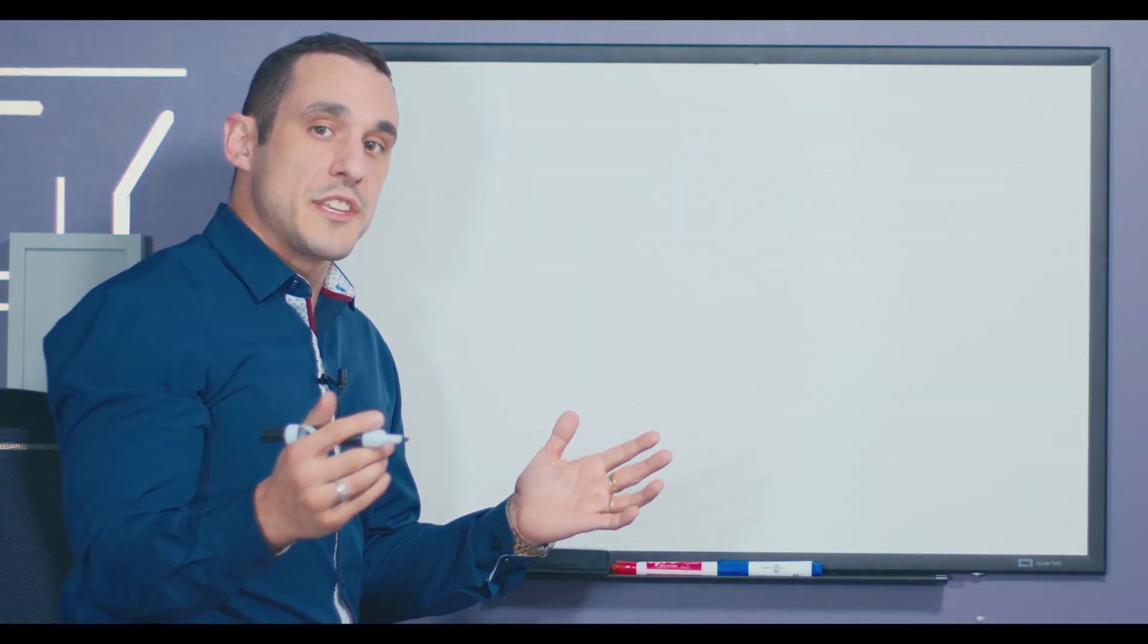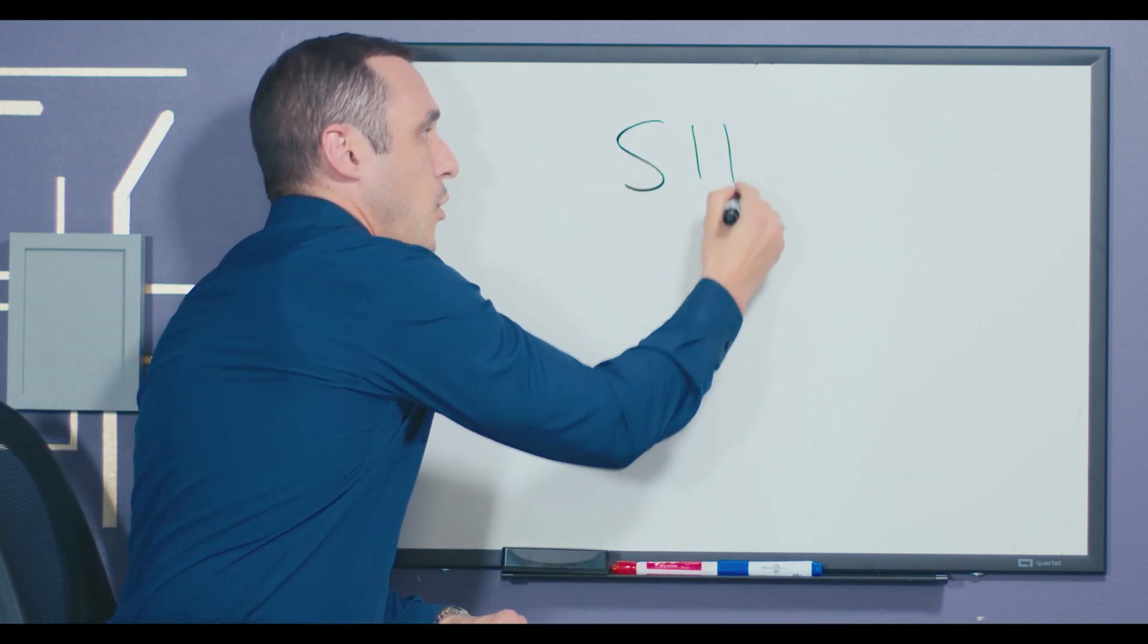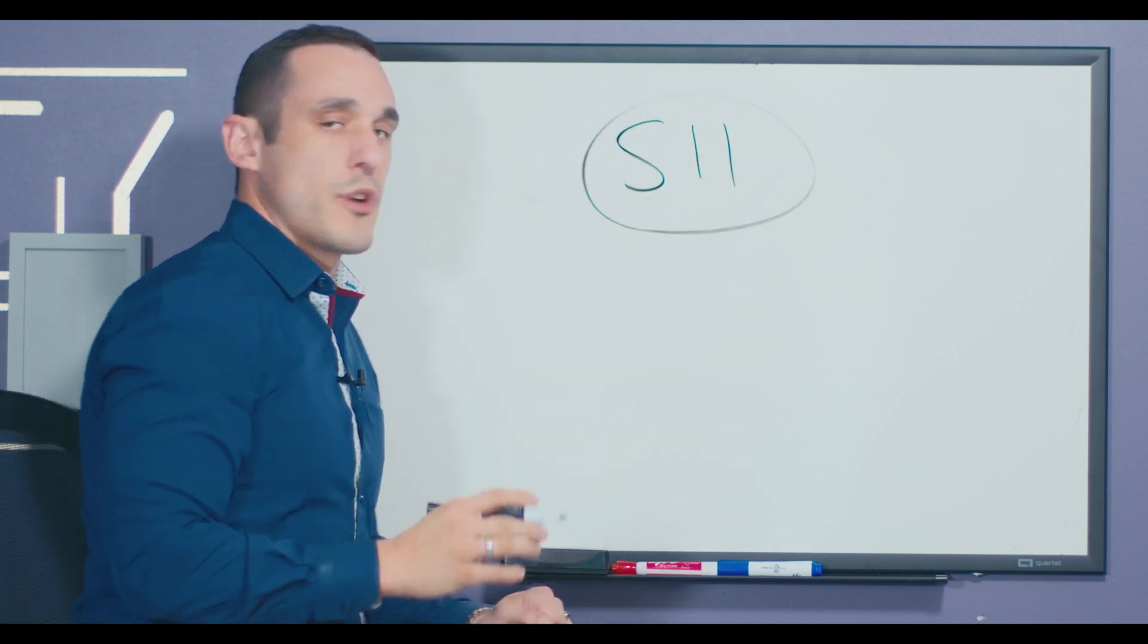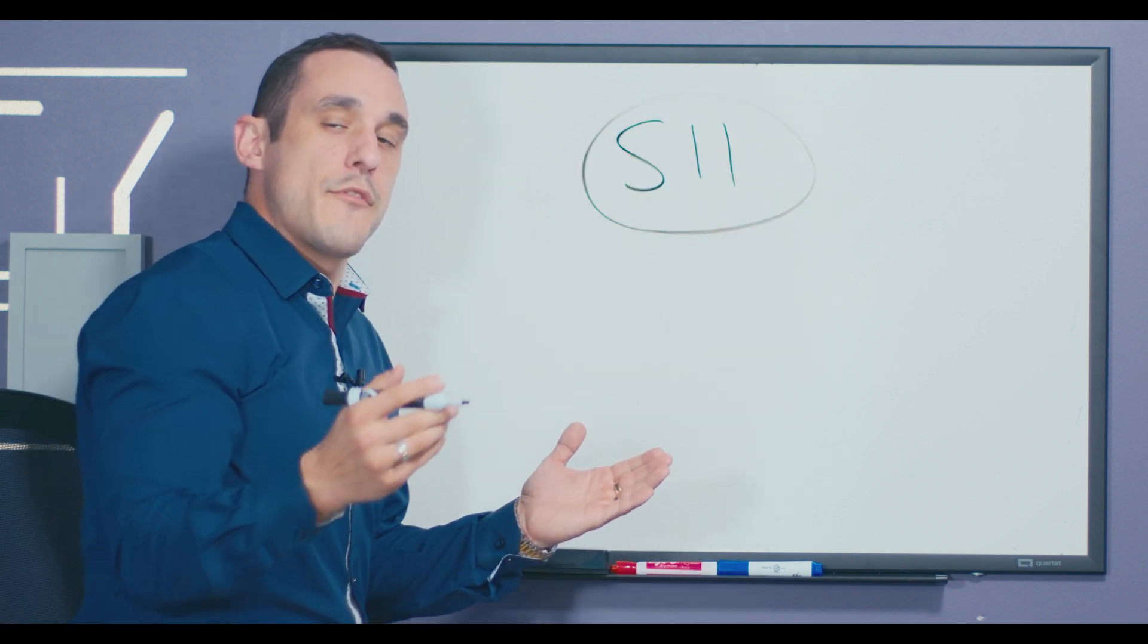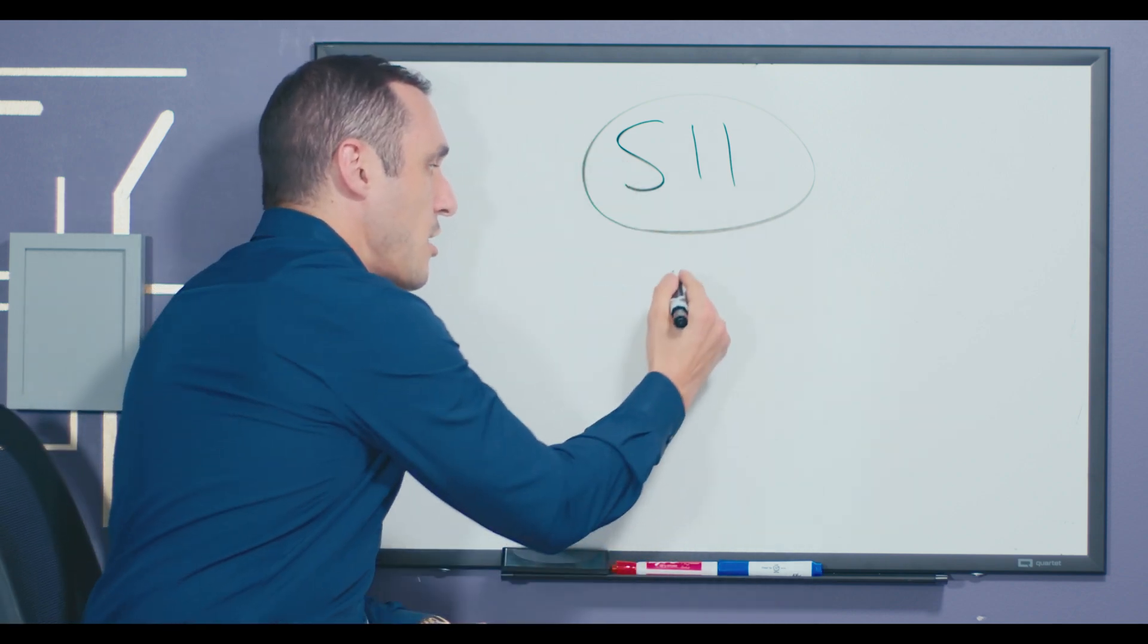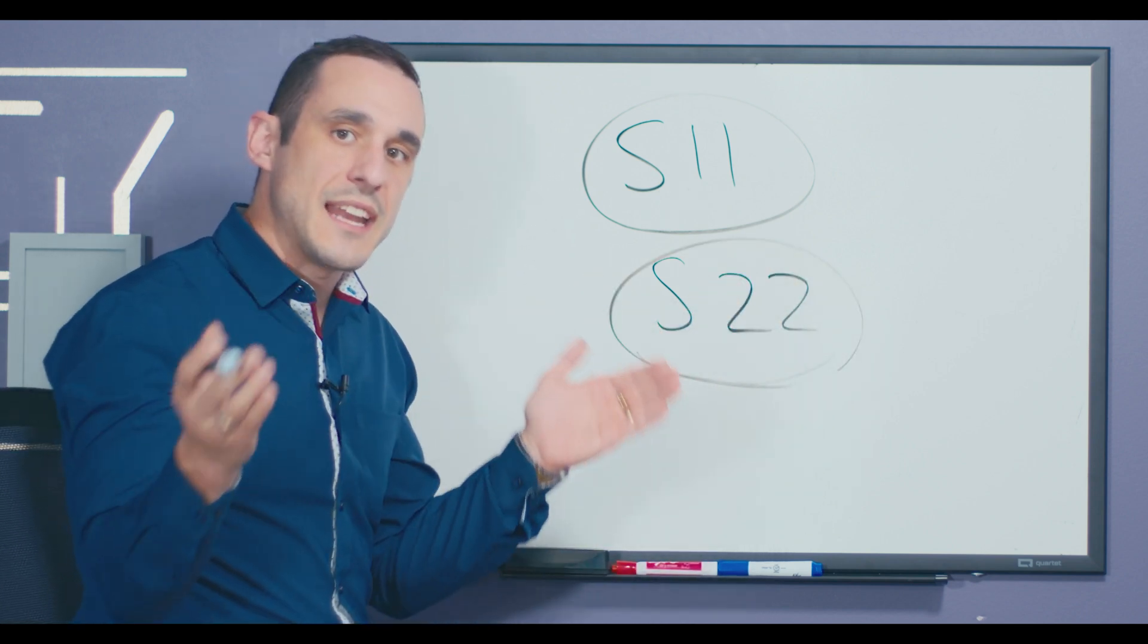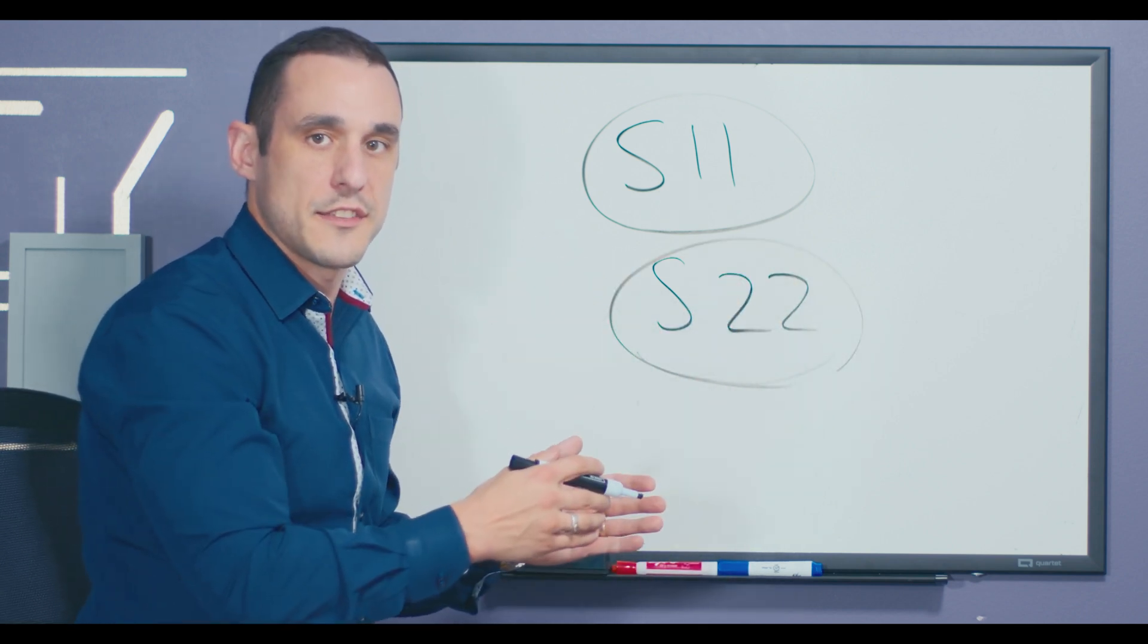The way we measure PCB trace impedance is by using S-parameters, and specifically we want to use S11 as our S-parameter for determining impedance. Now if we want to look at the impedance coming from the other port in a two-port network, we would use S22. And of course we could extend this all the way up to any number of ports on our device under test.